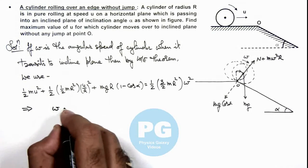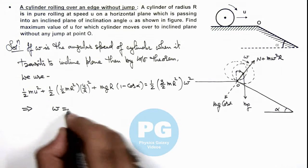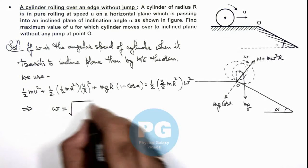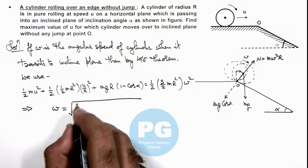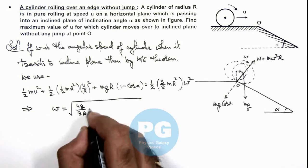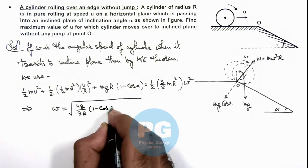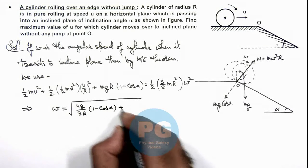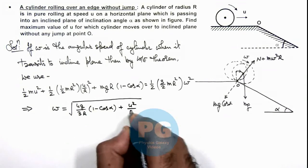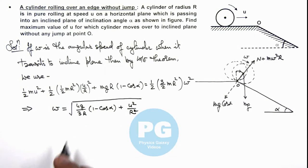So simplifying this, we'll get the value of omega, which is under the root 4g by 3R, multiplied by one minus cos alpha, plus u squared by R squared.